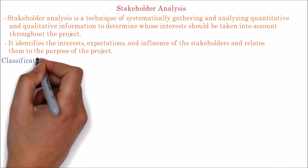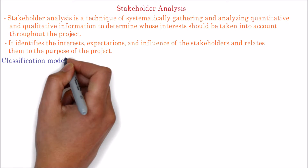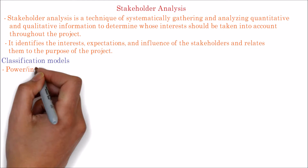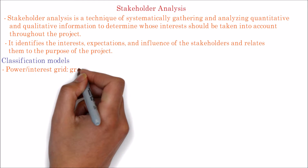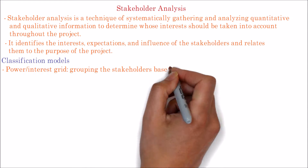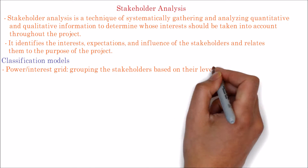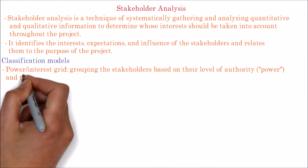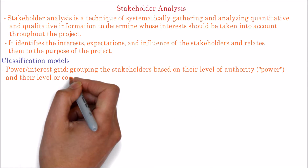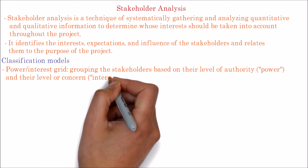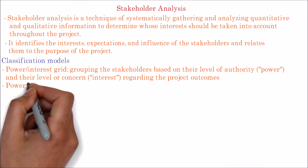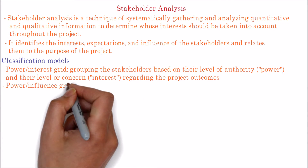Here are some classification models that help to better organize and manage the stakeholders. The Power-Interest Grid groups stakeholders based on their level of authority (power) and their level of concern (interest) regarding the project outcomes.